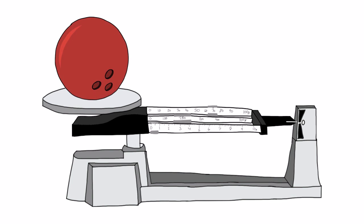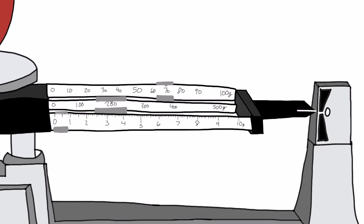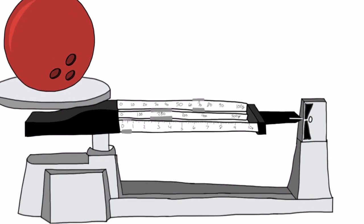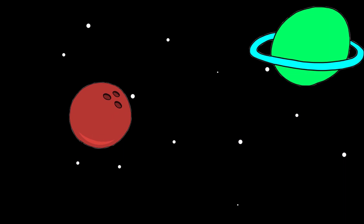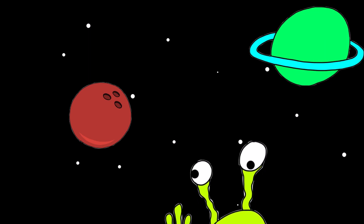Mass is different than weight. A toy ball might have a mass of 270 grams on Earth. If you take the same toy and bring it into space, the amount of matter in the ball did not change, so its mass is still 270 grams.